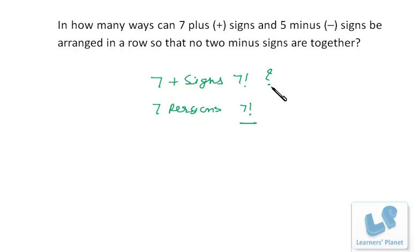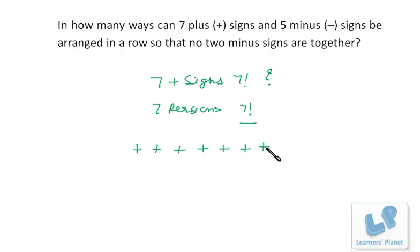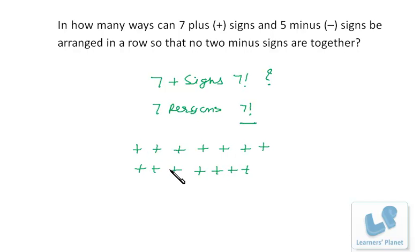Why can't they be? Because when we are arranging persons, all the persons are different from each other — all the persons are unique, and you can make a clear distinction between two persons. But if we talk about plus signs, all the plus signs are identical. So this is one arrangement of seven plus signs, and here is another arrangement — but both arrangements are the same, because all the plus signs are identical.